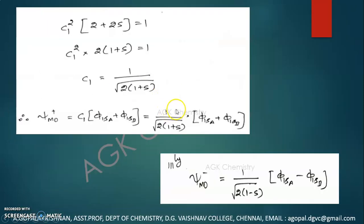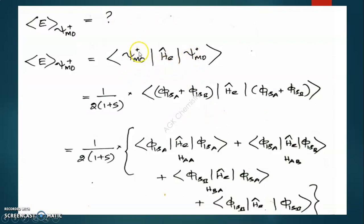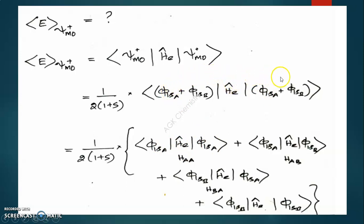The expectation energy formula is: E = ⟨ψ_MO|Ĥ_e|ψ_MO⟩. Substituting the wave function 1/√(2(1+S)) · (φ₁ₛ_A + φ₁ₛ_B), taking out the constant 1/(2(1+S)), we expand (φ₁ₛ_A + φ₁ₛ_B)|Ĥ_e|(φ₁ₛ_A + φ₁ₛ_B) into four integrals: ⟨φ₁ₛ_A|Ĥ_e|φ₁ₛ_A⟩ = H_AA, ⟨φ₁ₛ_A|Ĥ_e|φ₁ₛ_B⟩ = H_AB, ⟨φ₁ₛ_B|Ĥ_e|φ₁ₛ_A⟩ = H_BA, and ⟨φ₁ₛ_B|Ĥ_e|φ₁ₛ_B⟩ = H_BB.